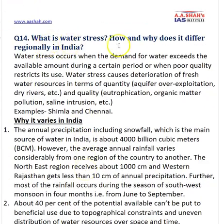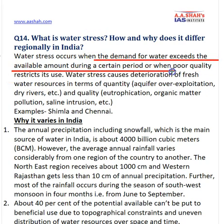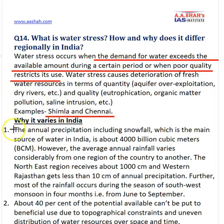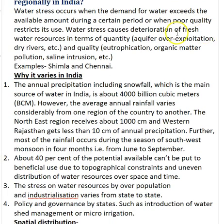The next question is: what is water stress and how does it differ regionally in India? Water stress is when the demand for water exceeds the available amount during a certain period, or when poor water quality exists. This puts restraints on both the quantity and quality of water. Examples include Shimla and Chennai, which both face severe water crises.